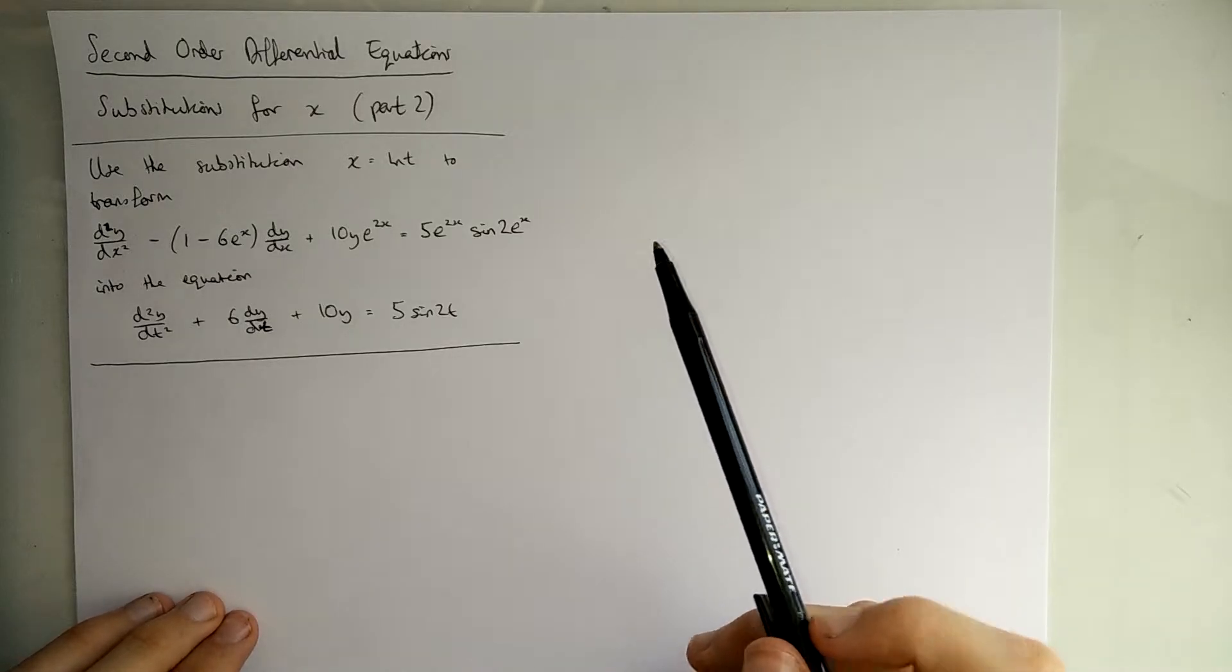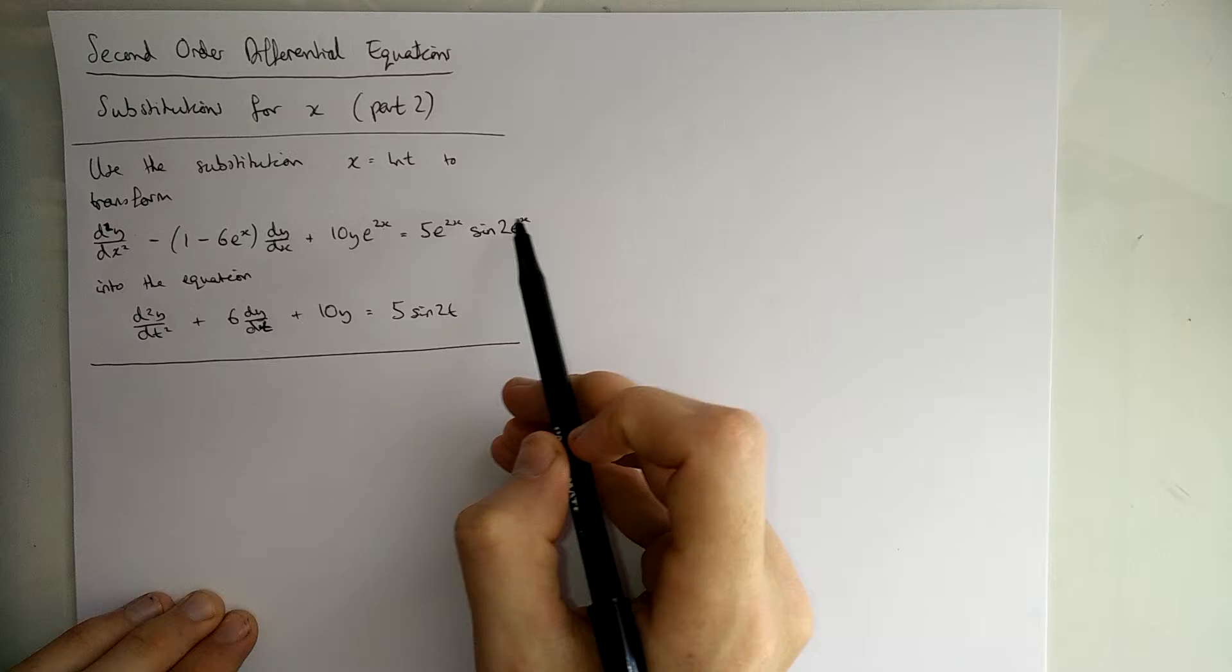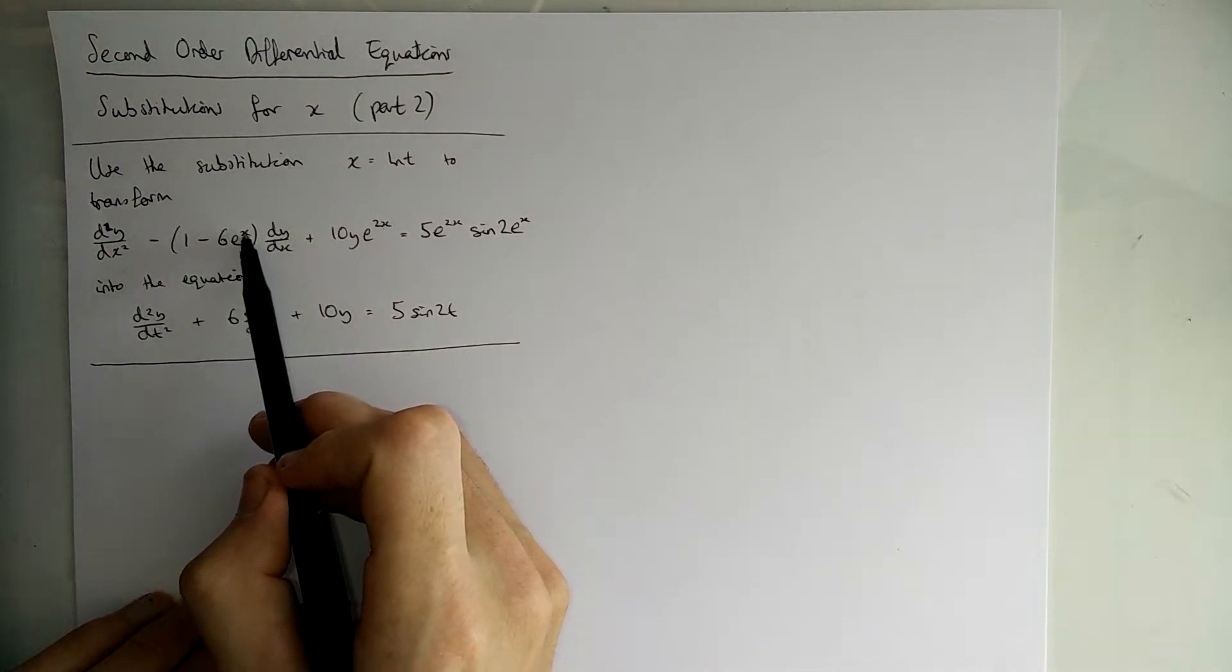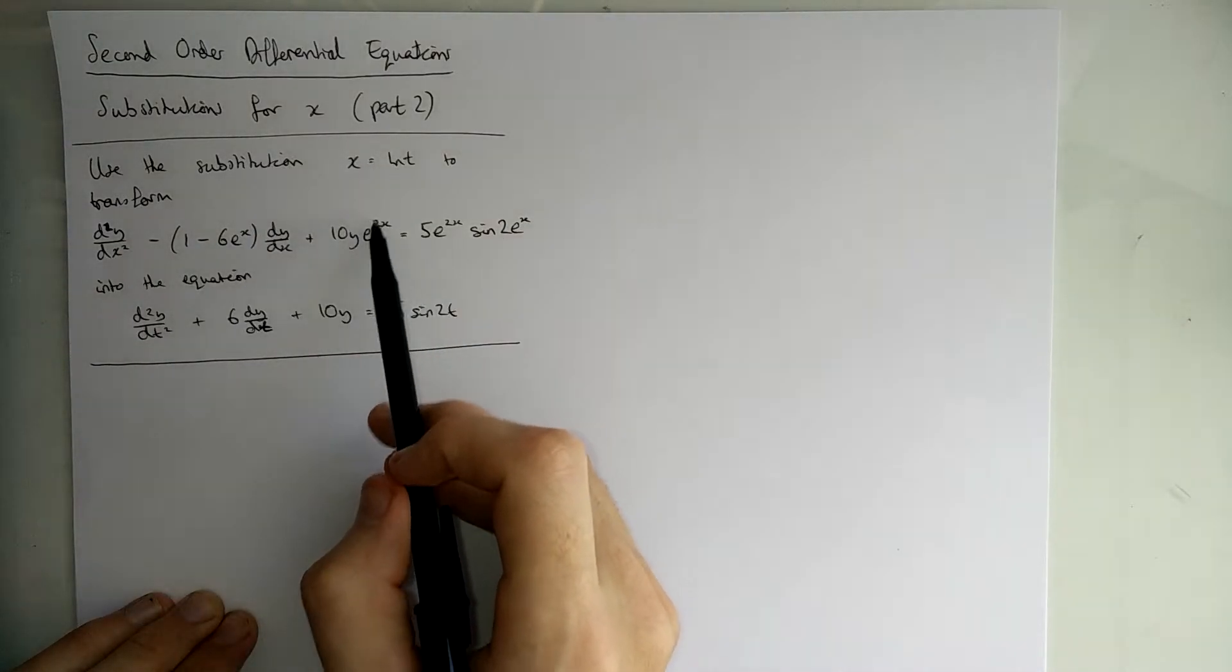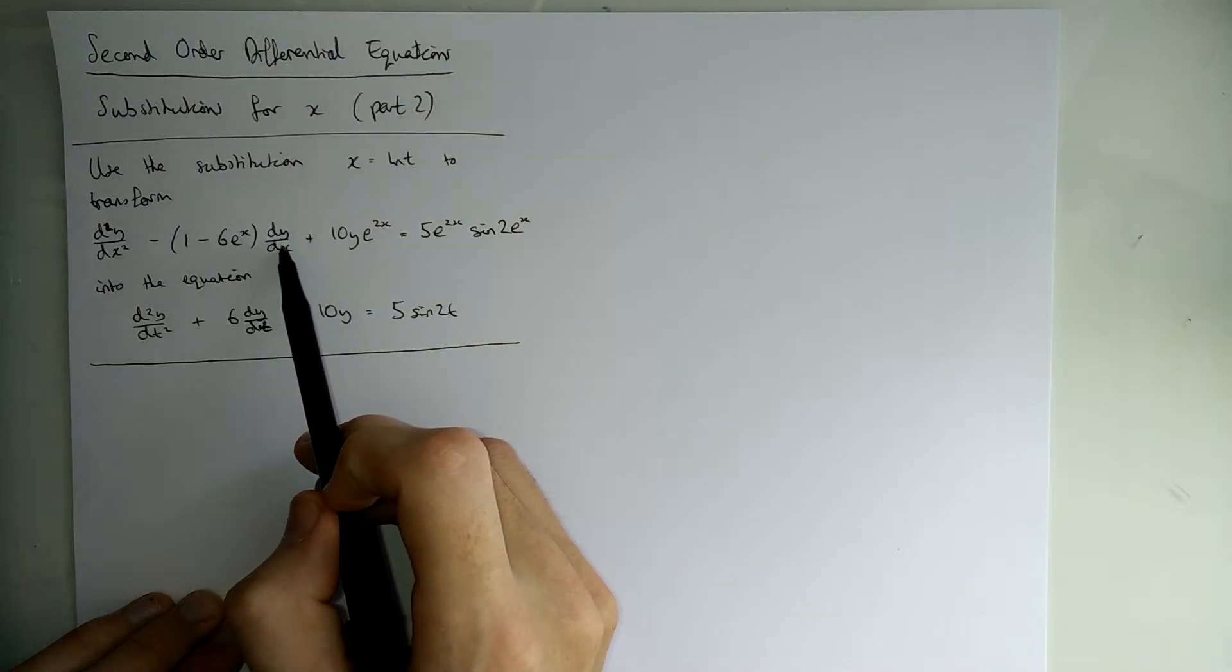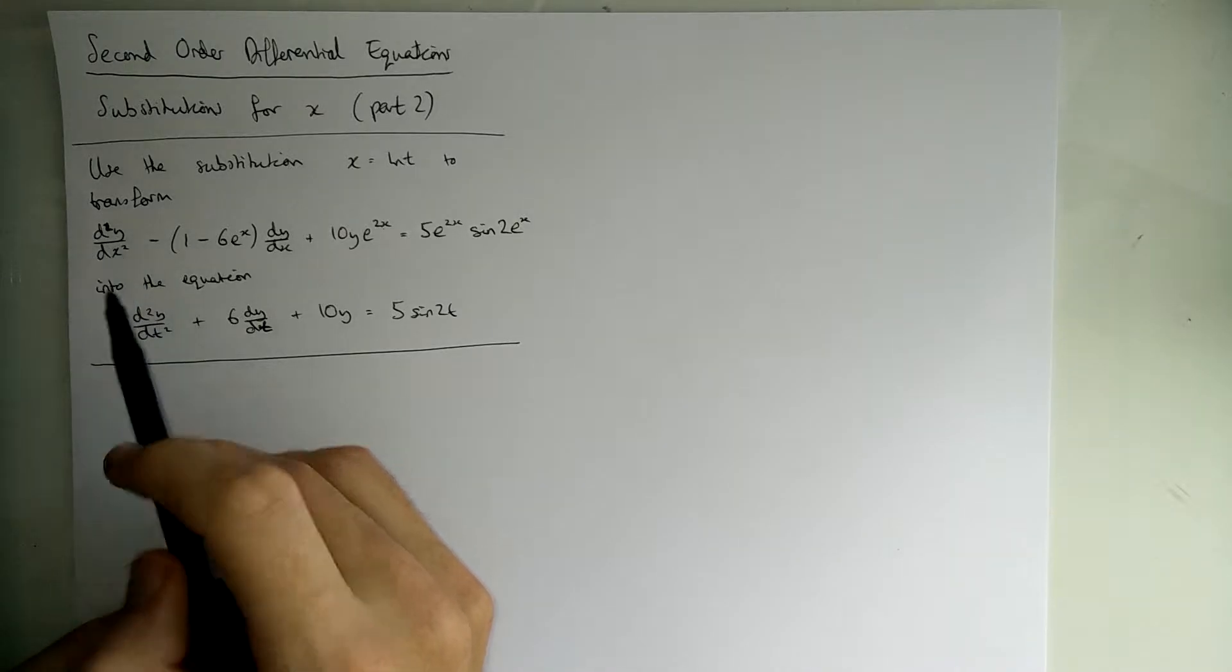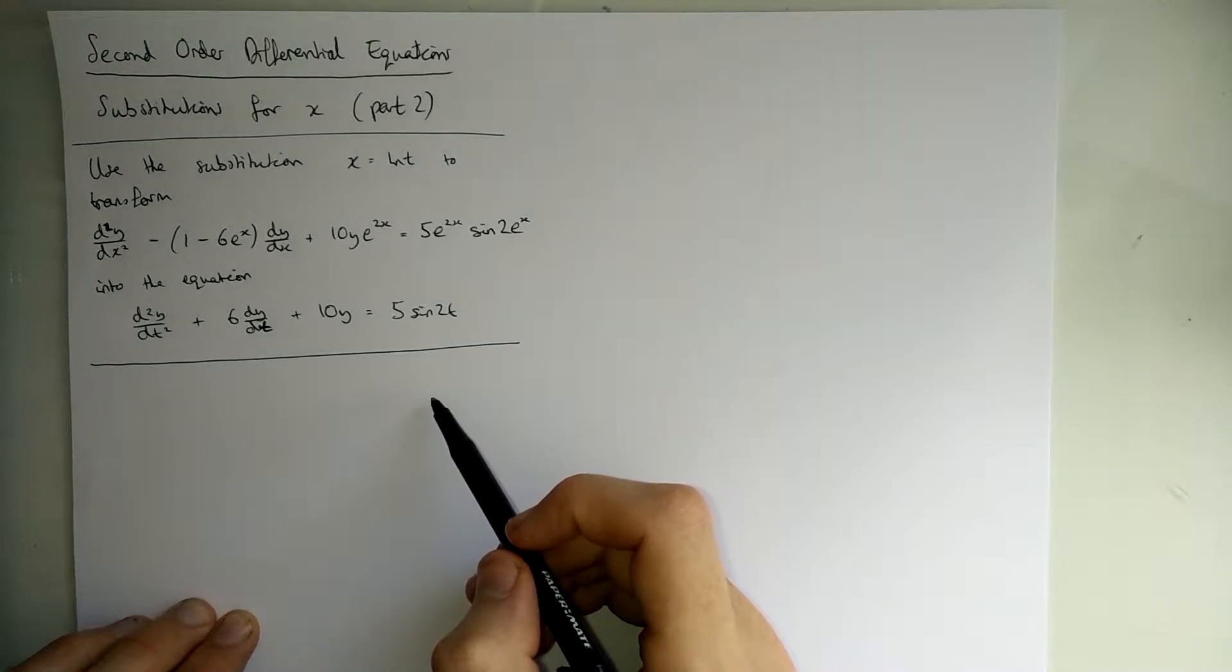So, as we said before in the first video, the hard part of this isn't replacing these x's here, these three x's you may call them, because that's very easy. You just plug in what they are. The hard thing is getting rid of these dy/dx's and the even harder thing is getting rid of this d²y/dx². We've got to use a chain rule and the product rule to do that.